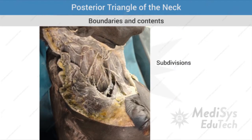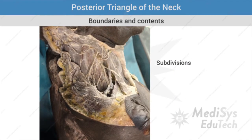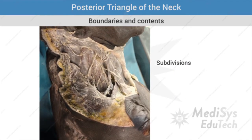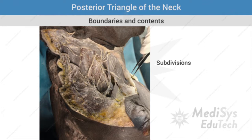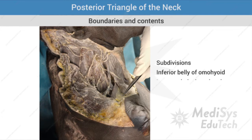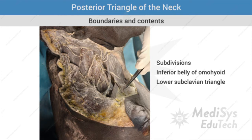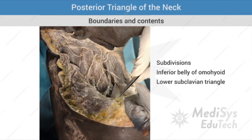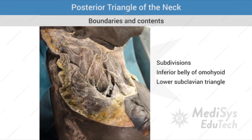Subdivisions: the posterior triangle is subdivided by the inferior belly of omohyoid into a lower subclavian or supraclavicular triangle.